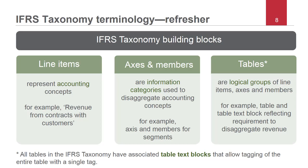Now, we thought it would be helpful to provide a quick refresher of the key building blocks of the IFRS taxonomy, which are line items, axes, members, and tables. Line items represent accounting concepts, which can be numerical or narrative. For example, the IFRS taxonomy contains a line item, revenue from contracts with customers, to reflect a disclosure requirement in IFRS 15. Axes, together with their members, represent information categories that accounting concepts can be broken down into. For example, the IFRS taxonomy contains an axis for segments, which allows an entity to tag revenue disaggregated by segment. Finally, line items, axes, and members are grouped together in tables. All tables have an associated text block to allow tagging of the entire table with a single tag.